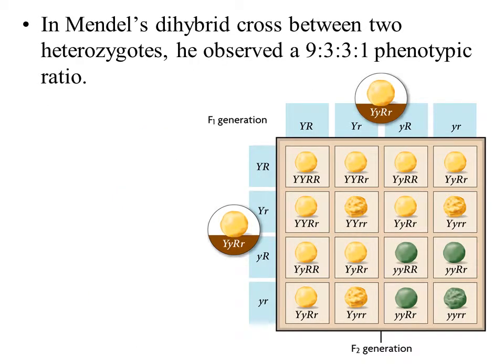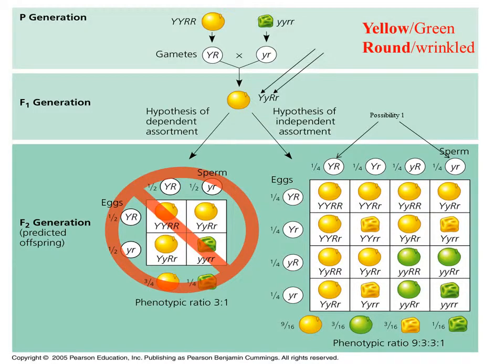In Mendel's dihybrid cross between two heterozygotes, he observed a 9 to 3 to 3 to 1 ratio. In this Punnett square, you can clearly see 9 yellow round seeds, 3 yellow wrinkled seeds, 3 round green seeds, and 1 green wrinkled seed — that is a 9 to 3 to 3 to 1 ratio. Based on the results of that heterozygous cross, Mendel concluded that chromosomes moved independently of one another.